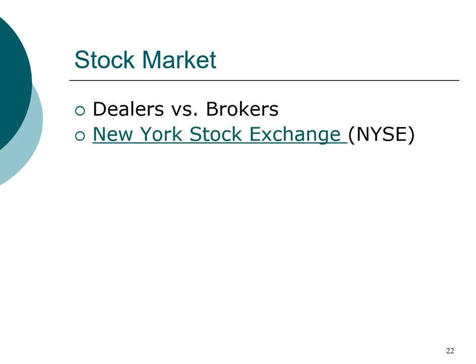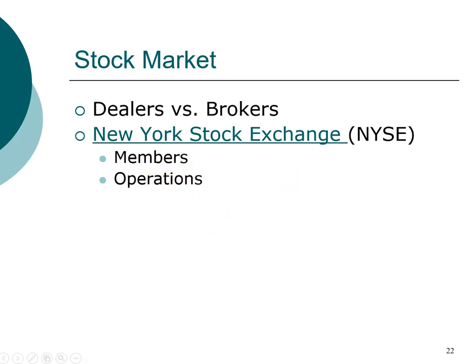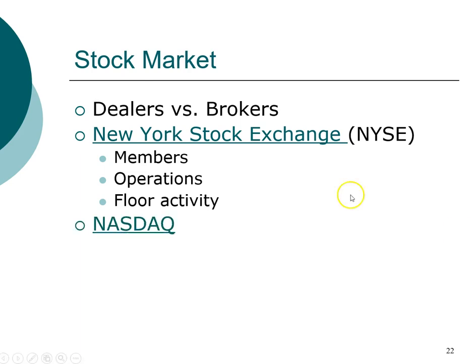Some of these stock markets are world famous, such as the New York Stock Exchange. Interestingly, the New York Stock Exchange is a broker's market and has members. A major competitor to the New York Stock Exchange is Nasdaq. Nasdaq is a dealer market — so New York Stock Exchange is a broker market and Nasdaq is a dealer market. Nasdaq doesn't have a physical exchange, but rather is a network of computers.